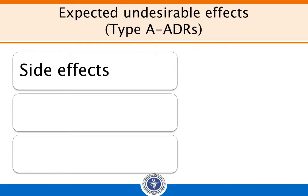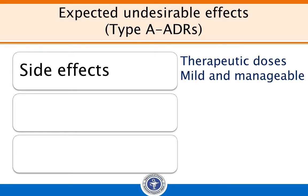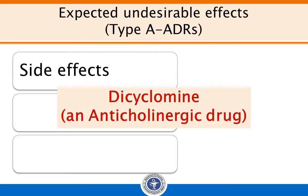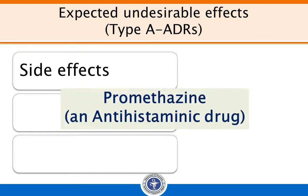Side effects are undesirable effects which are observed even with the therapeutic doses of the drug and are usually mild and manageable. For example, dicyclomine, which is an anticholinergic drug, relieves the pain of intestinal colic due to its antispasmatic action — which is a desirable effect. But it also causes dryness of mouth even at therapeutic doses, which is recognized as a side effect. Similarly, promethazine, an anti-histaminic drug, has anti-allergic action but also produces sedation at therapeutic doses.